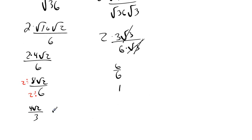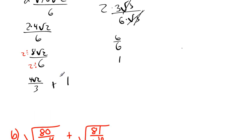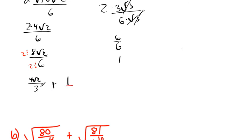So we're adding the left side plus the right side. The left side became 4 radical 2 over 3, and the right side is 1. We're done with the problem, but let me show you one more thing. For assessments, quizzes, or homework, they may want you to write your answer with a common denominator. Let me show you how to do that.